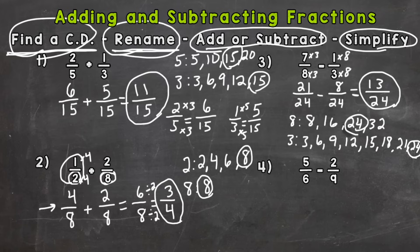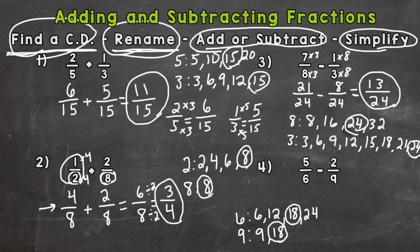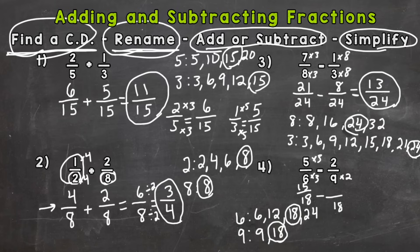Number four has denominators of six and nine. Listing multiples of six: six, twelve, eighteen, twenty-four. Multiples of nine: nine, eighteen — we have a match. Our common denominator is eighteen. Six times three is eighteen, so five times three is fifteen, giving us fifteen eighteenths. Nine times two is eighteen, so we multiply the top by two as well: two times two is four, giving us four eighteenths. Subtracting: fifteen minus four is eleven, keeping the common denominator of eighteen.